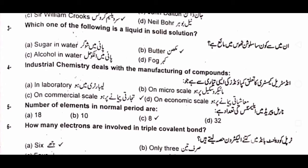Question number four: industrial chemistry deals with the manufacturing of compounds A) in a laboratory, B) on a micro scale, C) on a commercial scale, D) on an economic scale. The answer is C) on commercial scale.